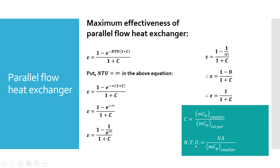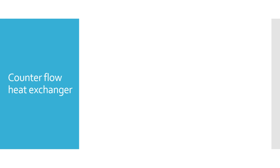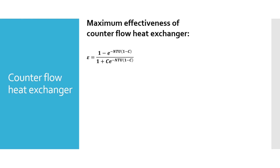This NTU — number of transfer units — will determine the physical size of the heat exchanger. Similarly, in case of the counter flow heat exchanger, the effectiveness we have derived is: 1 minus e raised to minus NTU(1 minus C), divided by 1 plus C times e raised to minus NTU(1 minus C).